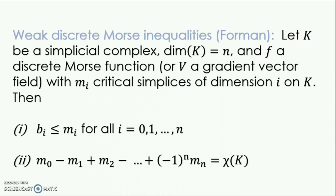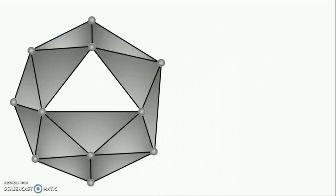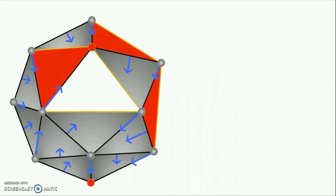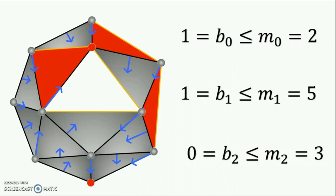This means that given any discrete Morse function or gradient vector field on a simplicial complex, we can estimate the Betty numbers. For example, let's take this simplicial complex and put some random gradient vector field on it. We will color the critical vertices red, the critical edges in orange, and the critical two faces in red as well. Then the discrete Morse inequalities give us the following estimates.